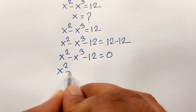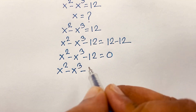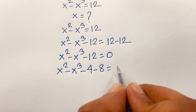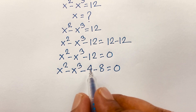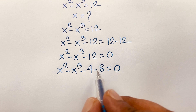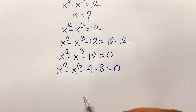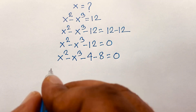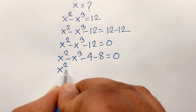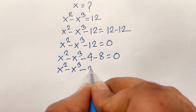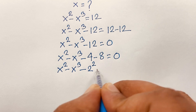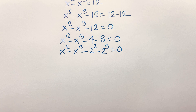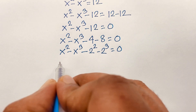Now I can see here we have x squared minus x cubed minus 12, and 12 can be written as 4 minus 8, which equals negative 12. So 4 is 2 to the power 2 and 8 is 2 to the power 3. This gives us x squared minus x cubed minus 2 squared plus 2 cubed equals 0.